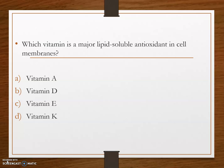Next question: which vitamin is the major lipid-soluble antioxidant in cell membranes? Options are: option A, vitamin A; option B, vitamin D; option C, vitamin E; and option D, vitamin K. The answer is option C, vitamin E. Vitamin E is the major lipid-soluble antioxidant in cell membranes. The water-soluble antioxidant equivalent is vitamin C.